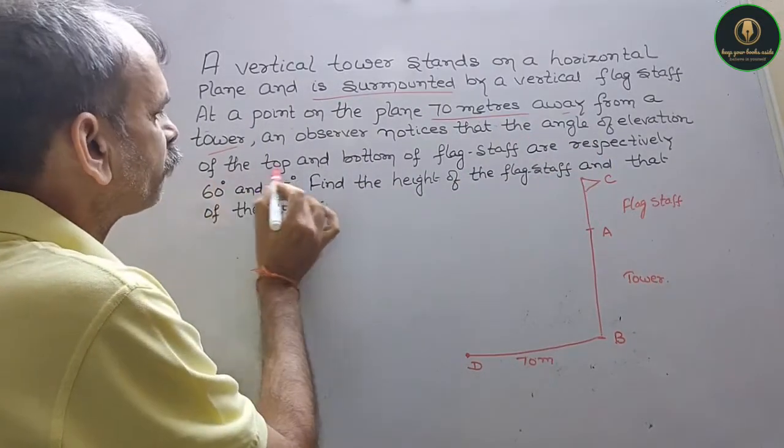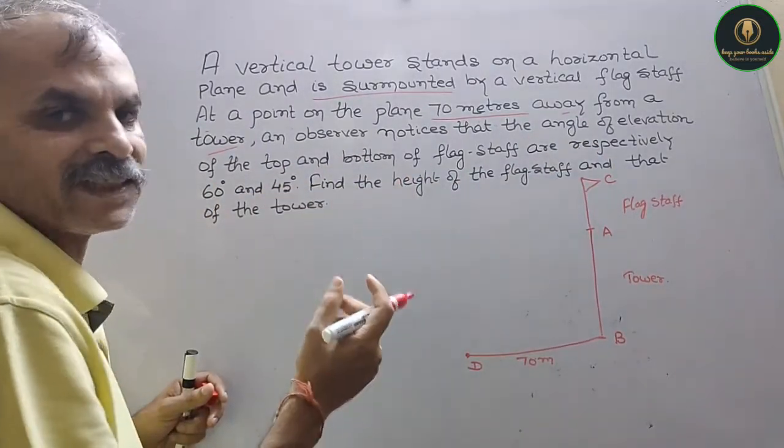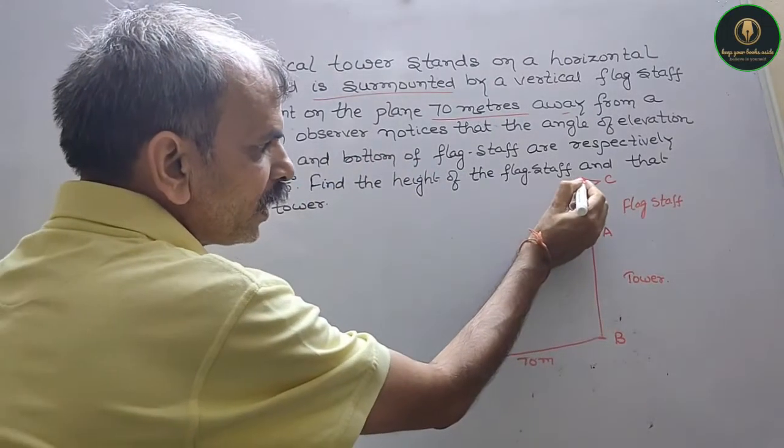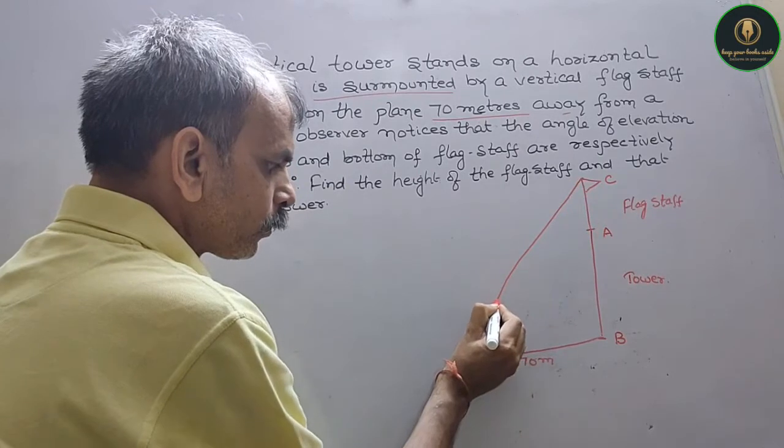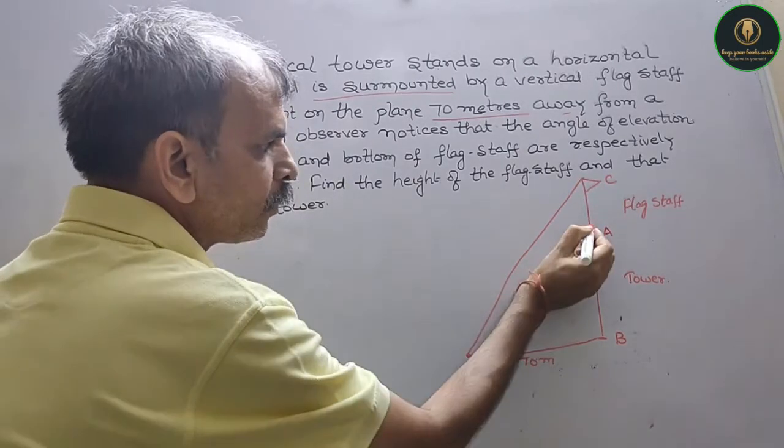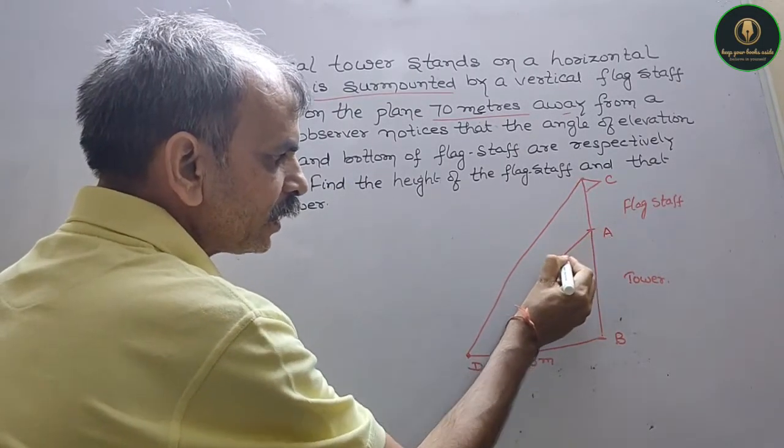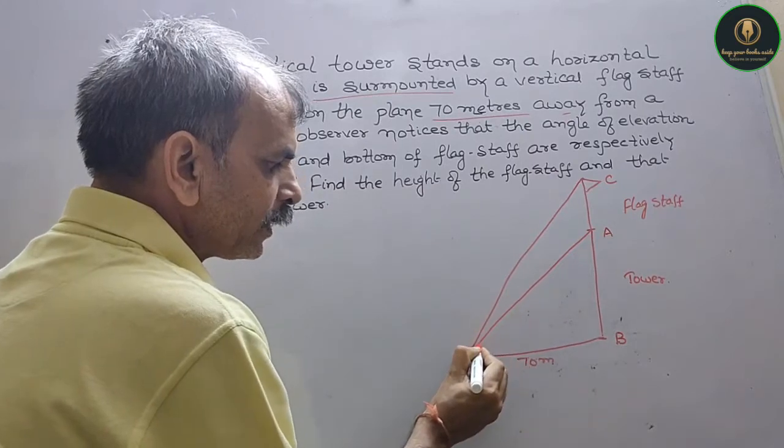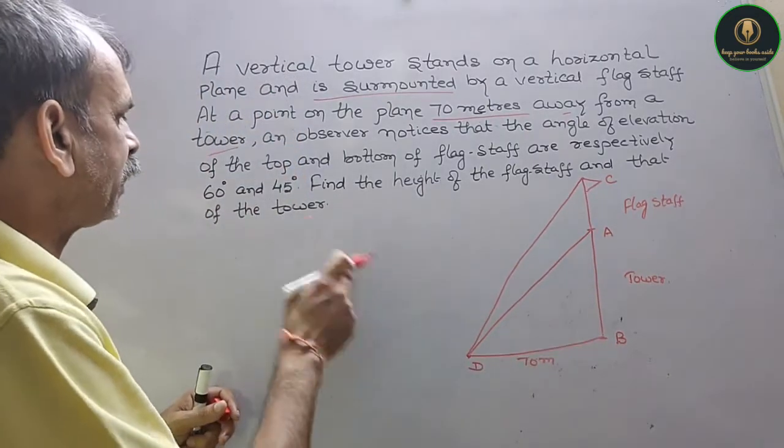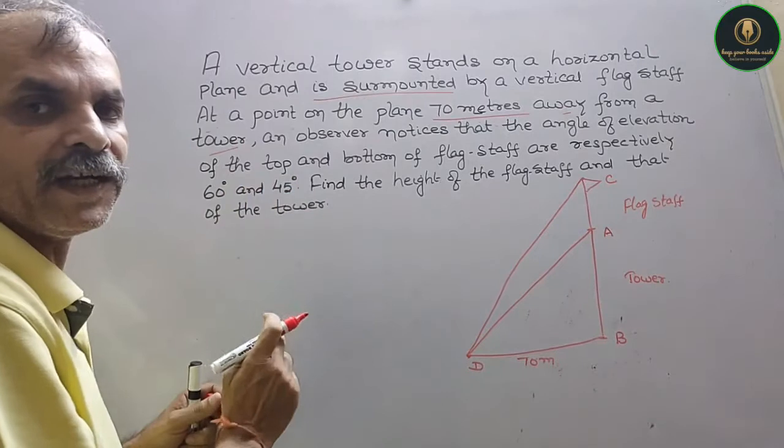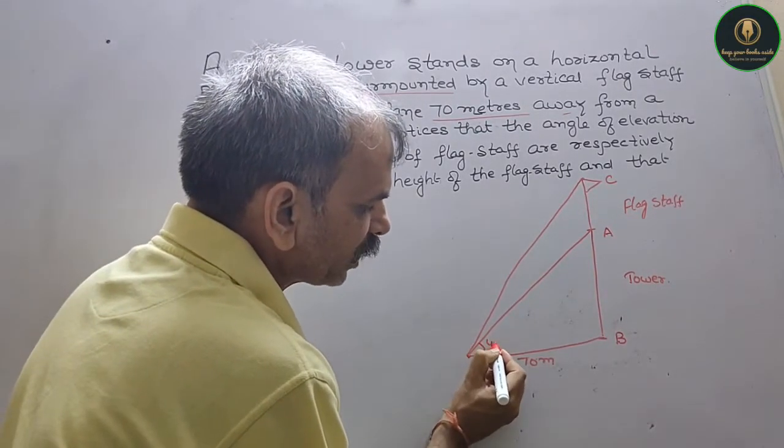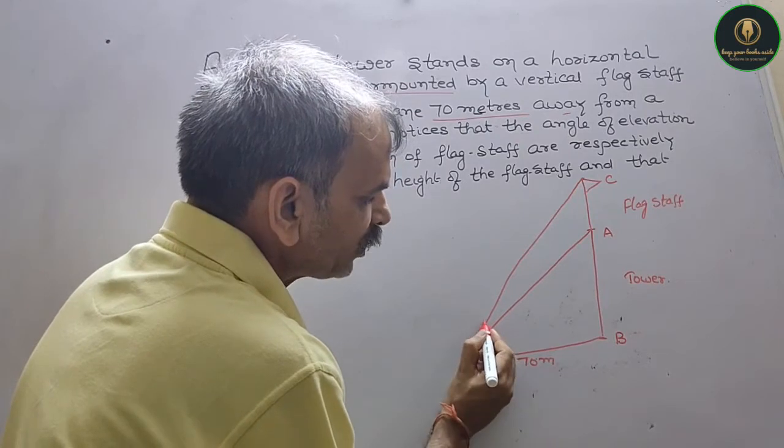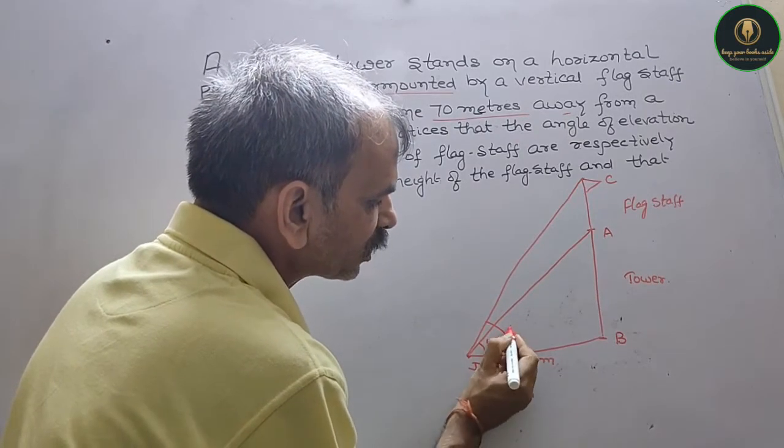What does it say? The angle of elevation of the top and bottom of the flagstaff, that means from here to here, and bottom is here. They are respectively 60 degrees and 45 degrees. That means the smaller angle is 45 degrees, and this is your bigger angle, that is 60 degrees.